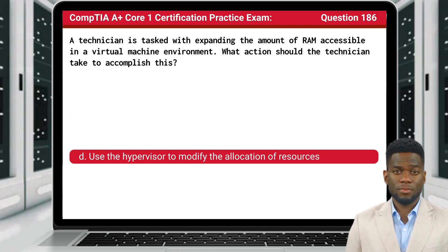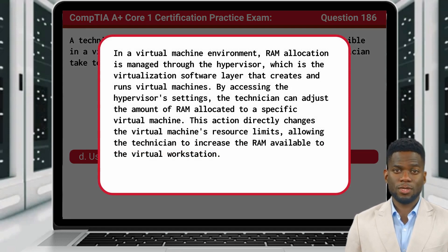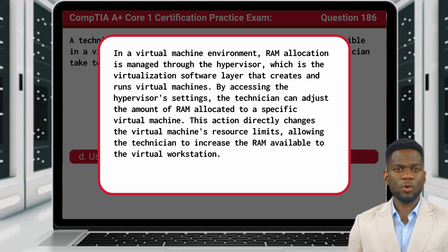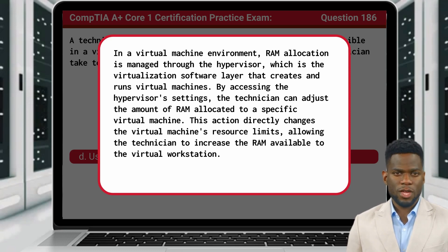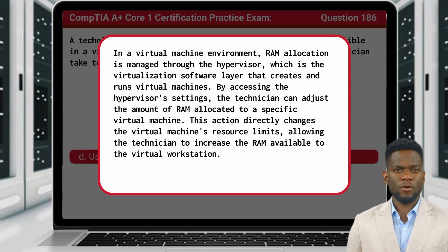The answer is D: use the hypervisor to modify the allocation of resources. In a virtual machine environment, RAM allocation is managed through the hypervisor, which is the virtualization software layer that creates and runs virtual machines. By accessing the hypervisor's settings, the technician can adjust the amount of RAM allocated to a specific virtual machine, directly changing the virtual machine's resource limits and allowing the technician to increase the RAM available to the virtual workstation.